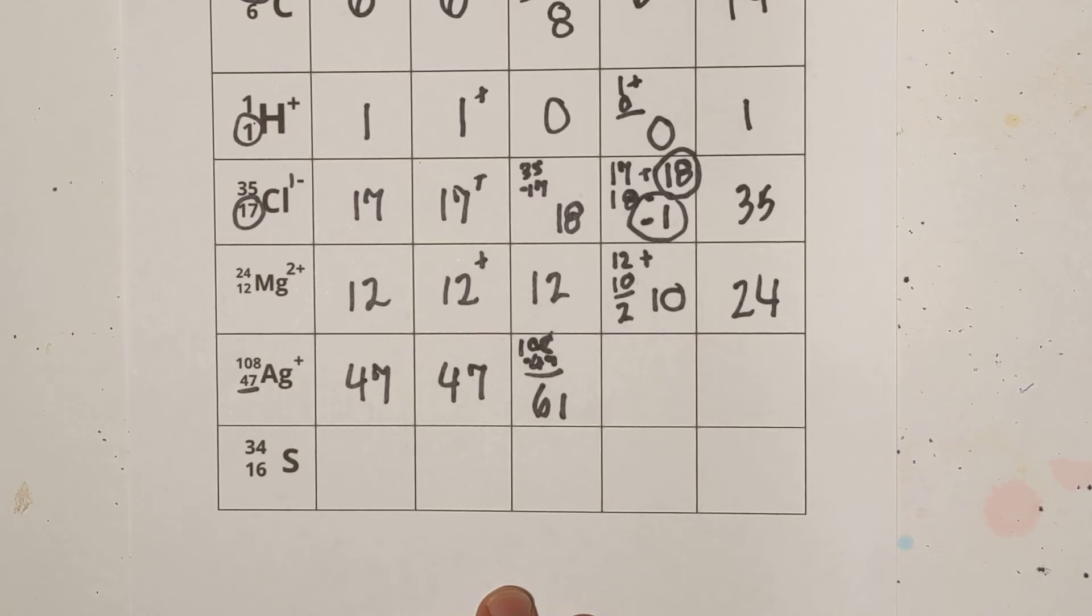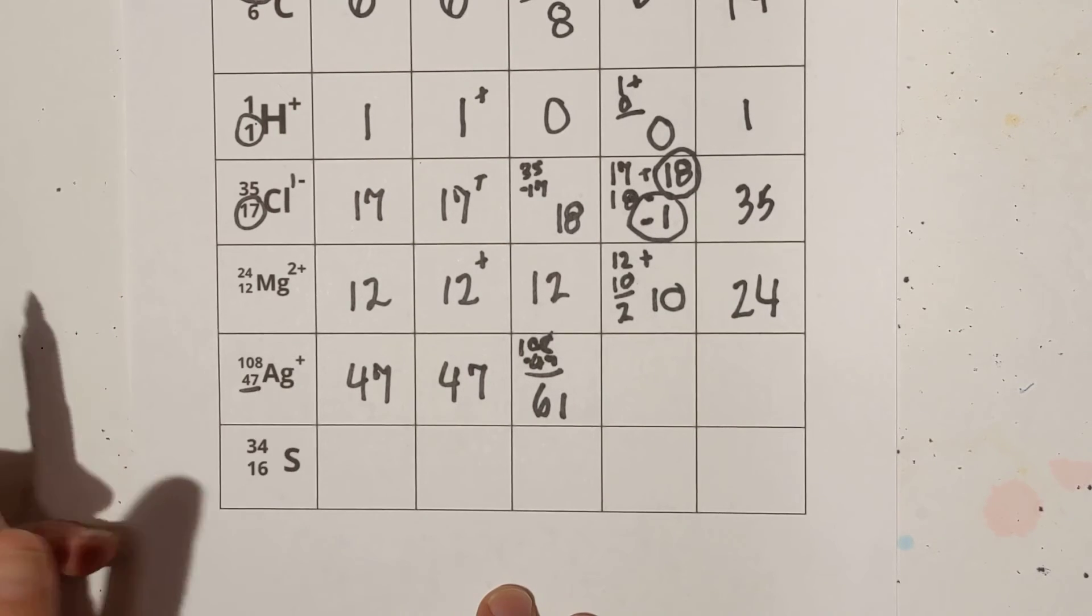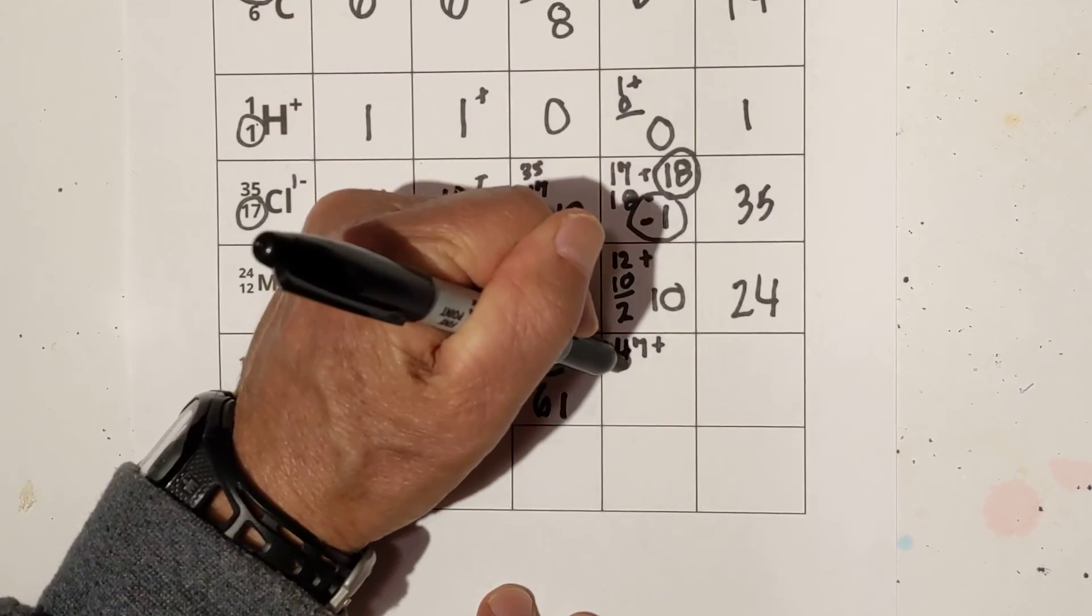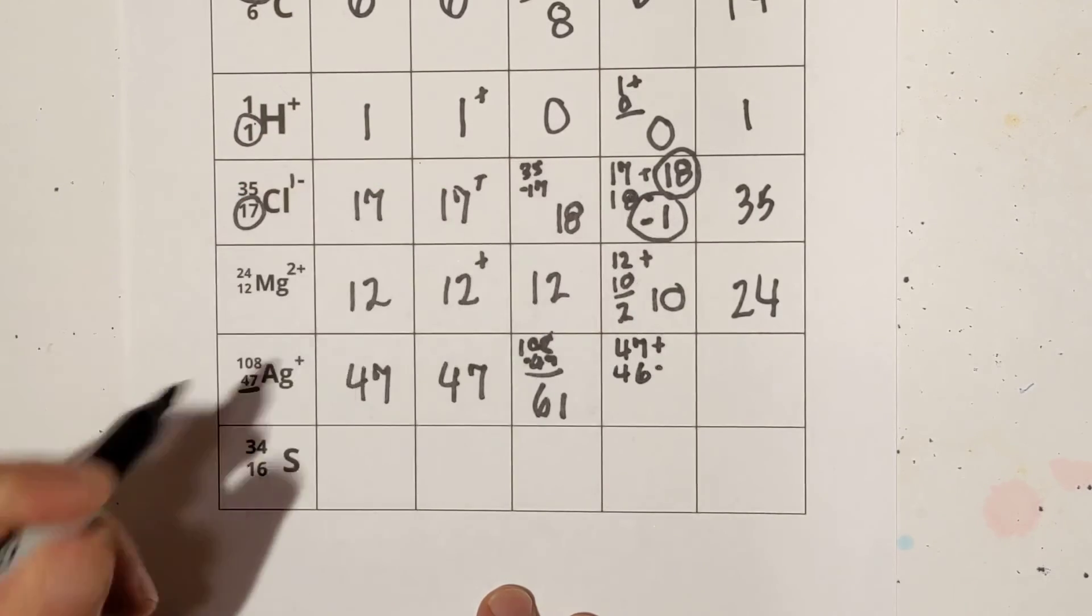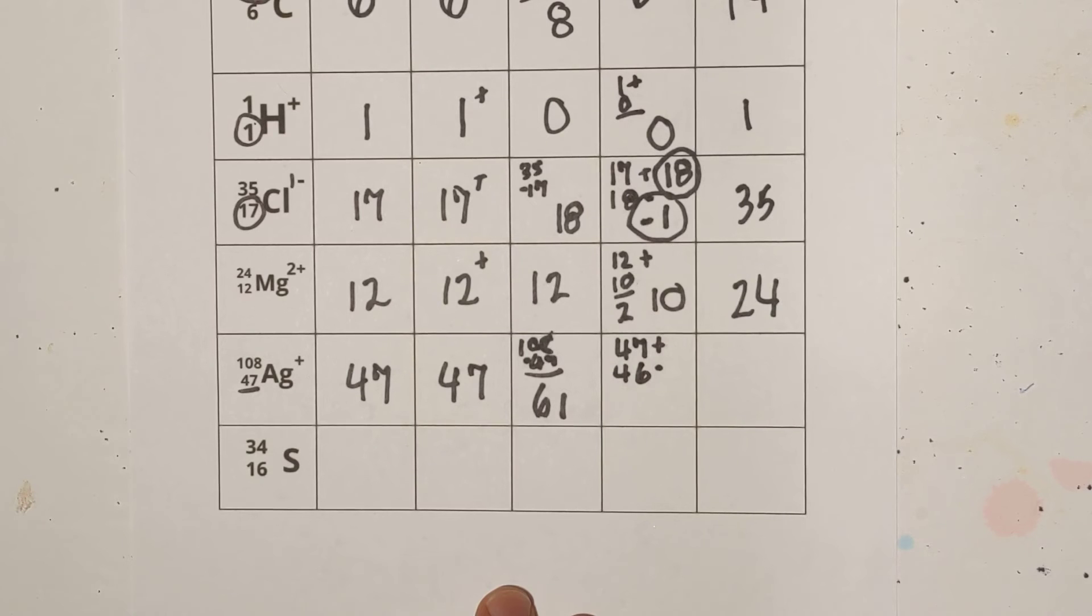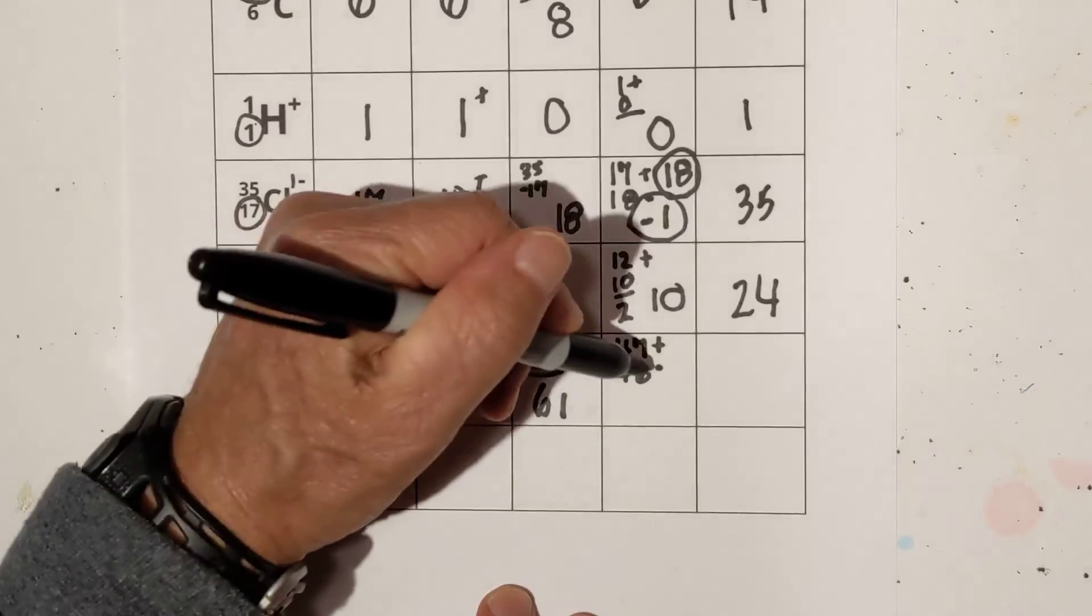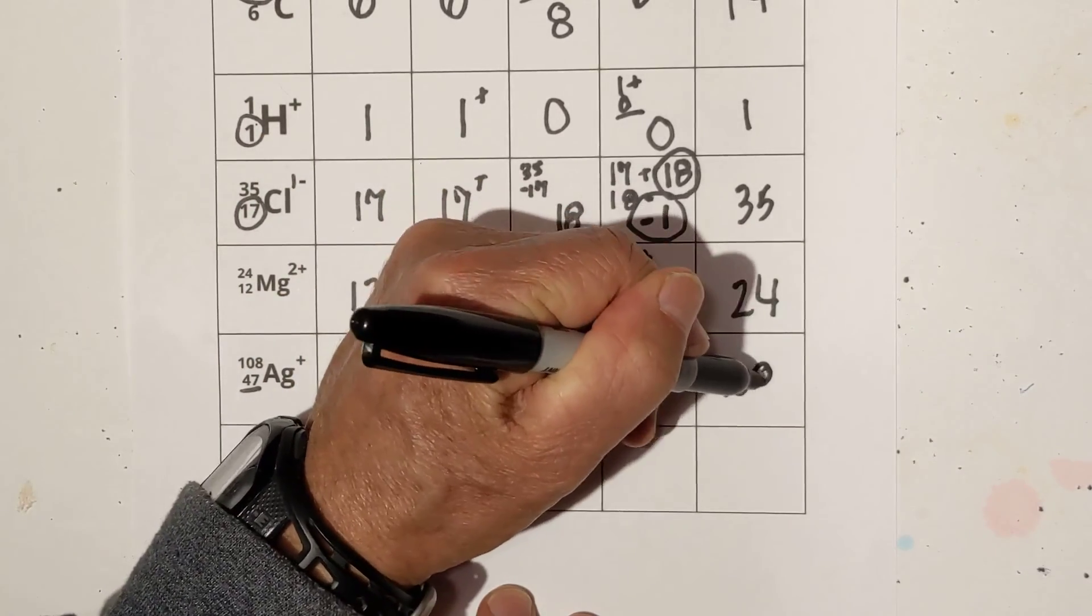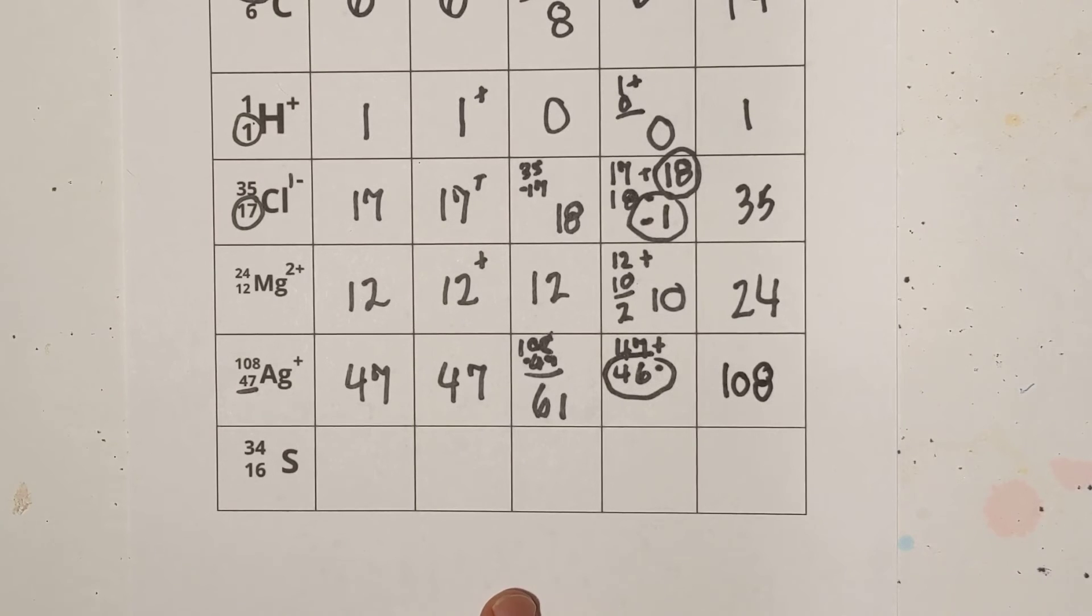Next, we have the number of electrons, so it has a plus 1 charge. It has 47 positives, so that means you're going to have 46 negatives, okay? And that gives you a plus 1 charge, so you have 46 electrons. I'll circle that, and the mass number is 108, and now we're down to our very last one.